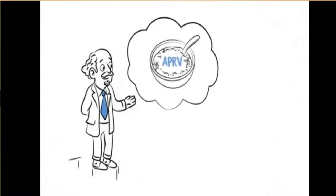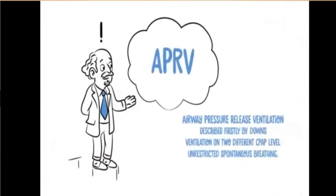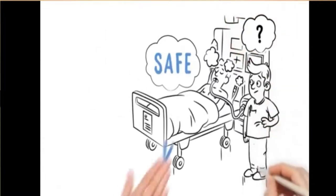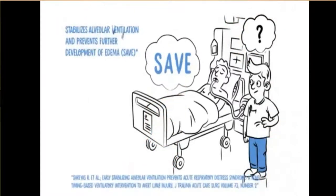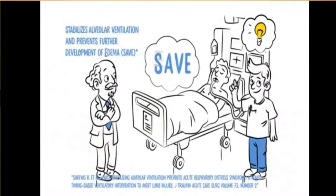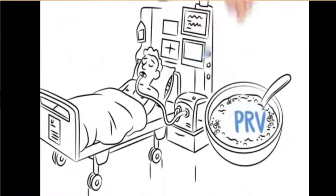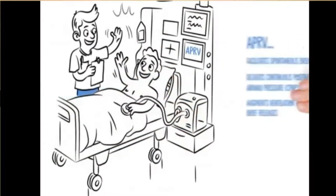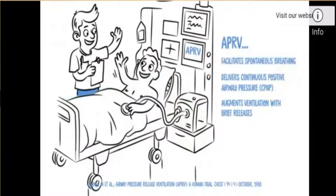APRV — airway pressure release ventilation — was first described by Downes. It implies ventilation on two different CPAP levels and supports unrestricted spontaneous breathing at both levels. It stabilizes alveoli, reduces ventilation, and prevents further development of edema. APRV facilitates spontaneous breathing by delivering continuous positive airway pressure and augments ventilation with brief pressure releases to support CO2 removal.